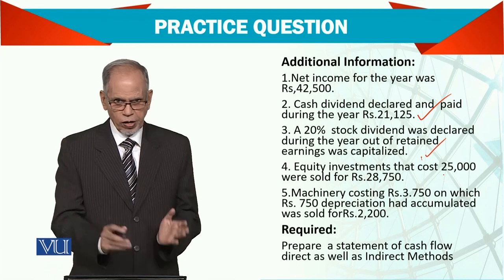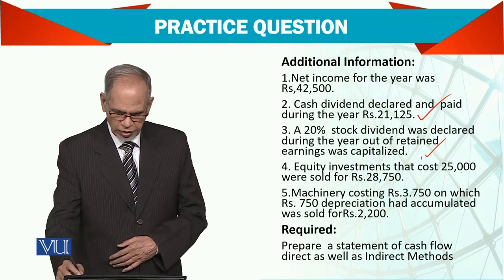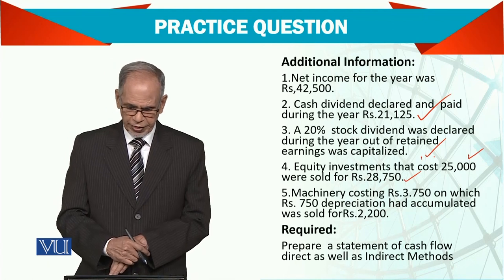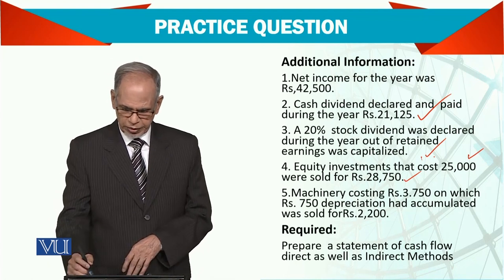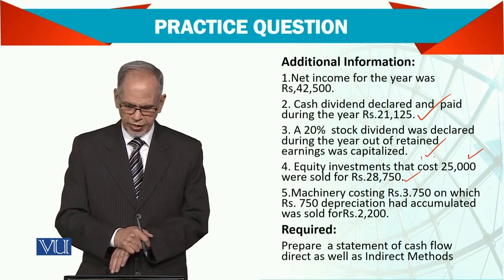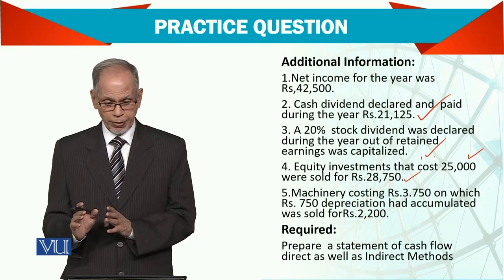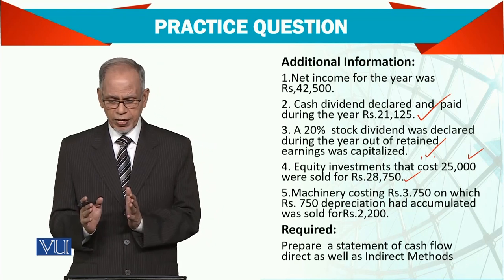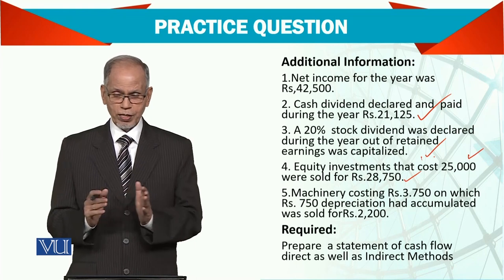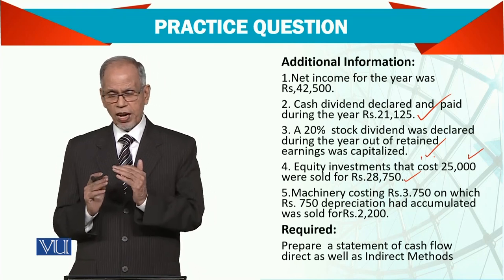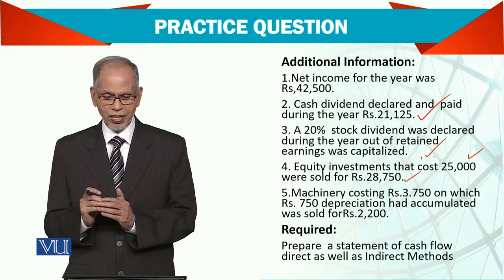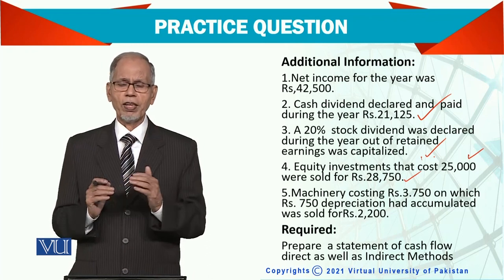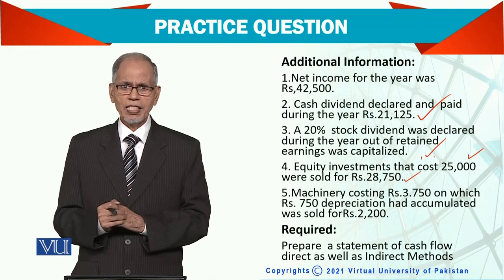Equity investment — that you have invested in somebody's business — you have sold it. Then there is 3,000 of machinery net book value you are selling for 2,200, so there is a loss of 800. So we have to see how this loss and gain will be added to or deducted from the profit and loss when working on the cash flow statement using the indirect method.